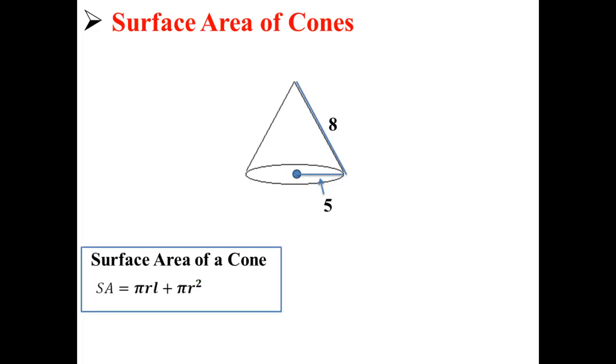The equation for the surface area of a cone is: surface area equals pi times r times length, plus pi times r squared.